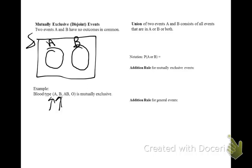The union of two events, A and B, consists of all events that are in A or in B or in both. Notationally, the probability of A or B, that's our keyword, is the same thing as the probability of A union B.